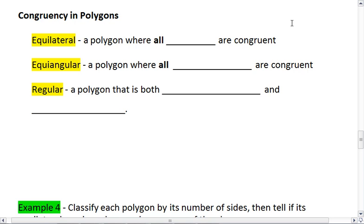There's one more topic we need to talk about, and that's congruency in polygons. When polygons are considered equilateral, it's a polygon where all sides are congruent. So if I have a polygon and I mark every single side congruent with my tick marks, this is an equilateral polygon.